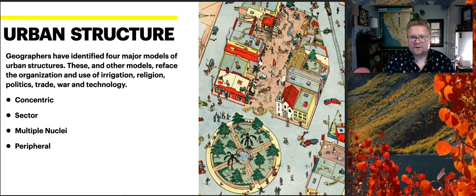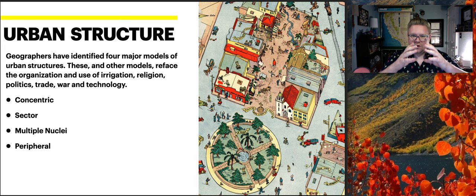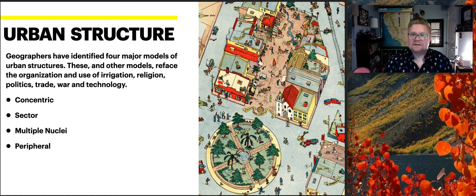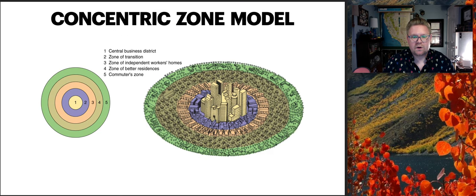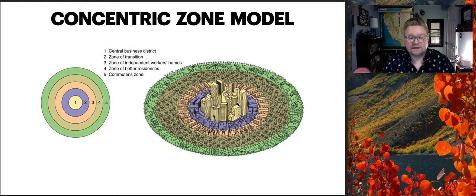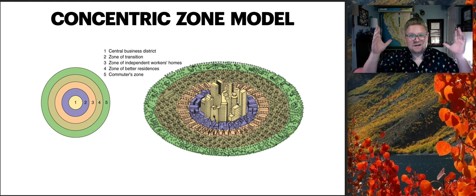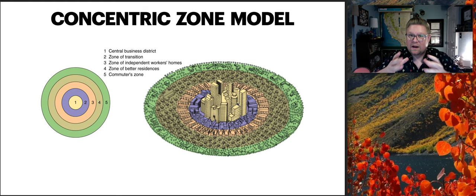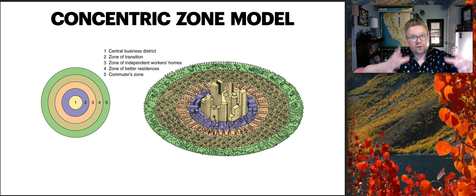Starting with the concentric zone model, it's broken up into rings. Number one, the central part, is the central business district — the core of the city. Using Los Angeles as an example, all the skyscrapers and industry are right in the center, and things work their way outward. The zones radiate from that downtown core.